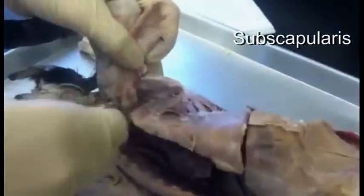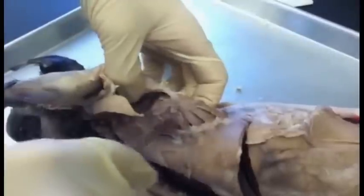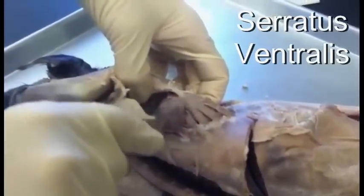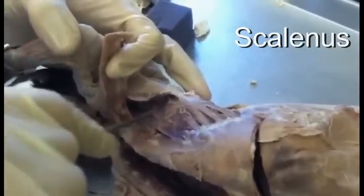On the bottom part, right below the infraspinatus, is the teres major. The underside of the scapula is the subscapularis. Also attaching to the scapula is another fan of muscles called the serratus ventralis. Very close to the serratus ventralis is the scalenus, and there are actually three heads to the scalenus — this big one is the one we're pointing out.